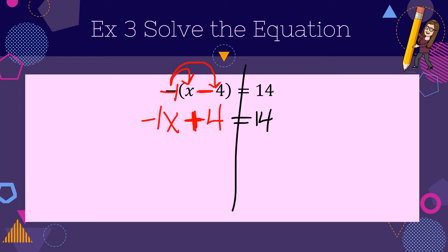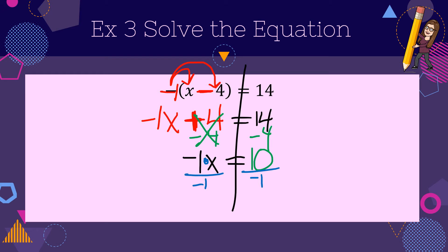The 14 falls down. Next step: undo any addition or subtraction — it says plus 4, so we're going to undo it by subtracting 4. The negative 1x falls down. 14 minus 4 gets me to 10. My last step: instead of multiplying by negative 1, I'm going to divide by negative 1. The x falls down. 10 divided by negative 1 is negative 10.